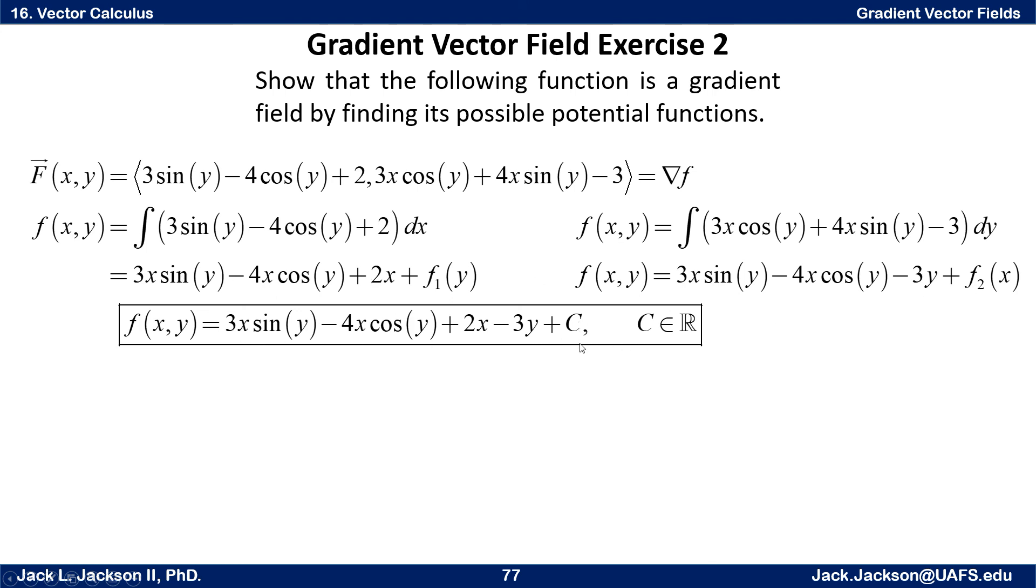And if that's the case then we can basically take all the terms that appear, have them show up once here, put our plus C, and we're good to go. But if for example if this had a 2xy term and this one didn't have that, then it's a no-go because that tells you this is not a gradient vector field. There is no possible potential function. But everything of course worked out just fine on this one, and it often does.